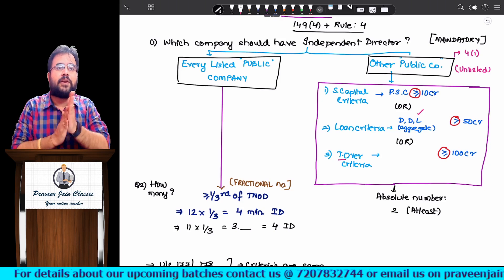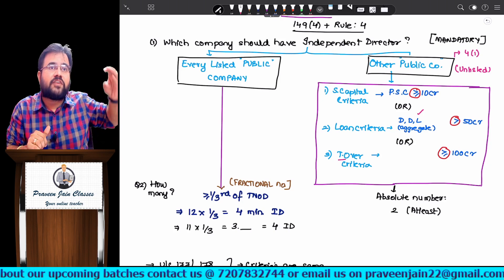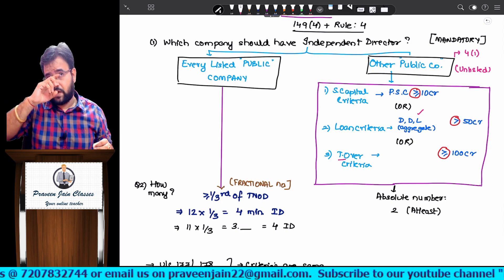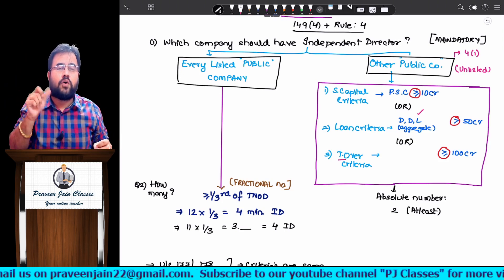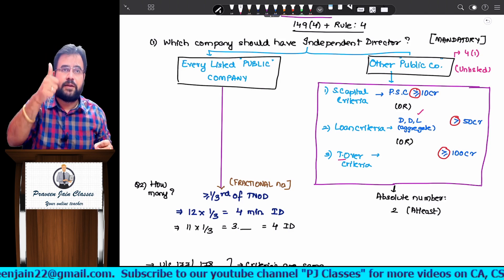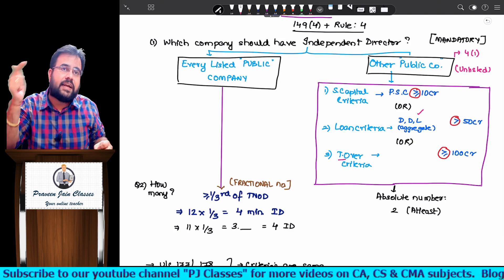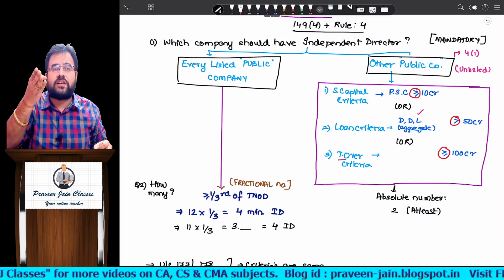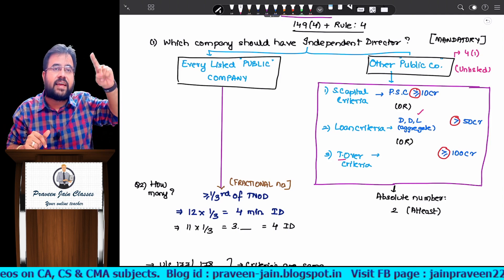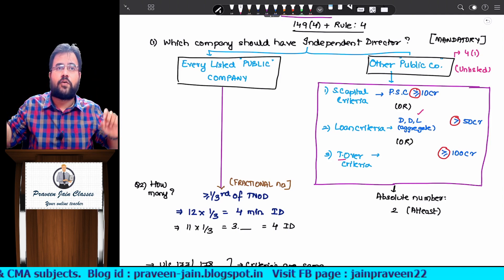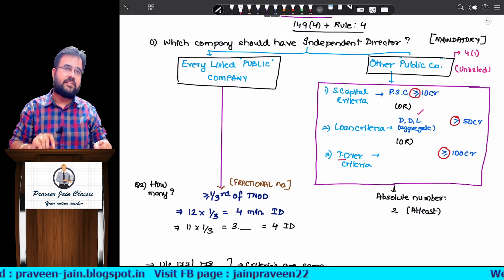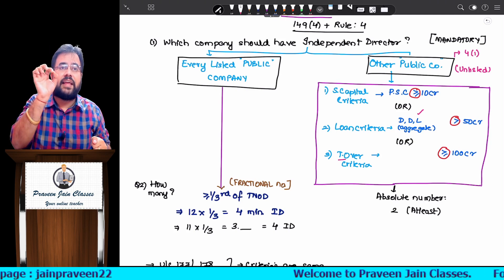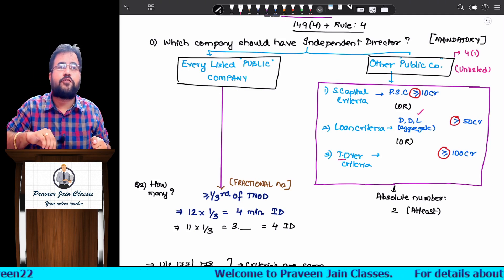Now, which company should have independent directors? One side: every listed public company. Other side: unlisted public companies — das, pachas, sao (10 crores paid-up capital, 50 crores DDL — deposits, debentures, loans — and 100 crores turnover). All these criteria are to be seen in the previous financial year as per audited financial statements, and if met, you appoint independent directors in the current year. Next question: how many?